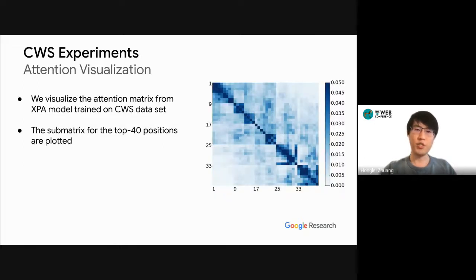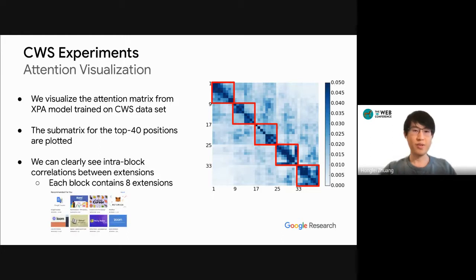We also visualize the attention matrix learned by the XPA model from the CWS dataset. We can clearly see dense sub-matrices for every eight extensions, which corresponds to the CWS homepage UI where every eight extensions are clustered into a block.